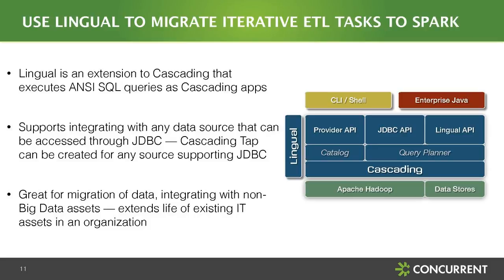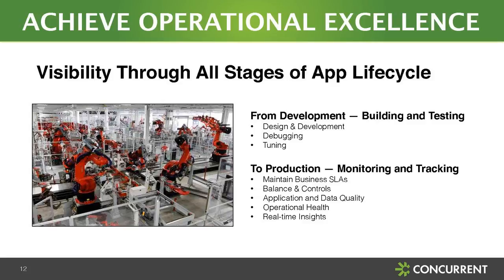Not only does cascading allow you to develop apps easily, it also allows you to integrate with different data sources. One key product around cascading is called Lingual — a SQL 92 layer on top of cascading. It allows you to copy-paste your ETL workflows into cascading so you don't have to make a huge investment in migrating your workload from a legacy ETL-based system to Hadoop. You can also use Lingual to connect to any JDBC-compliant data source. Once your app is up and running, you also want to monitor it — in enterprises, SLAs are everything. You cannot improve what you cannot measure. For this, we have a product called Driven.